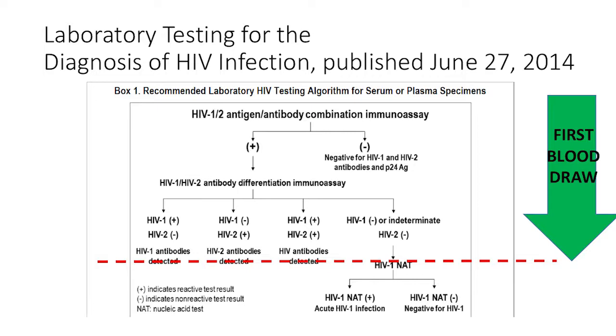If positive, the same sample is tested a second time, and this time it differentiates between HIV-1 — the common dominant form in the United States — and HIV-2, which is pretty rare and usually geographically located outside the United States. But some people move around our world, so we need to test for both. The second test within that first blood draw will decide: is there HIV-1, HIV-2, or both?